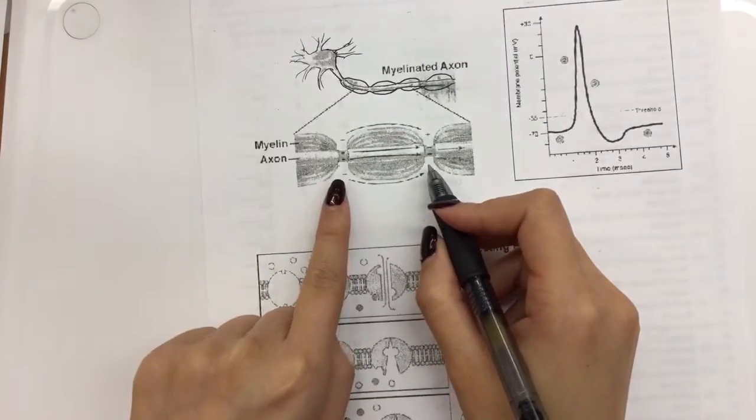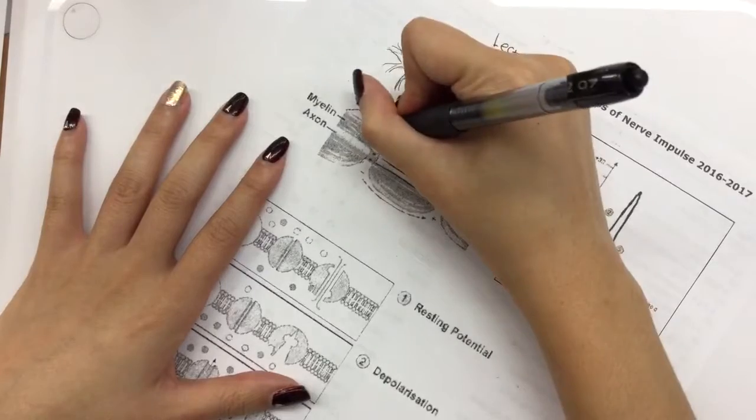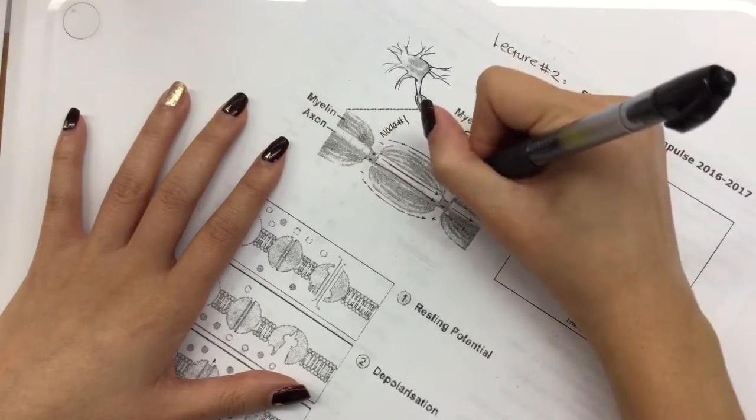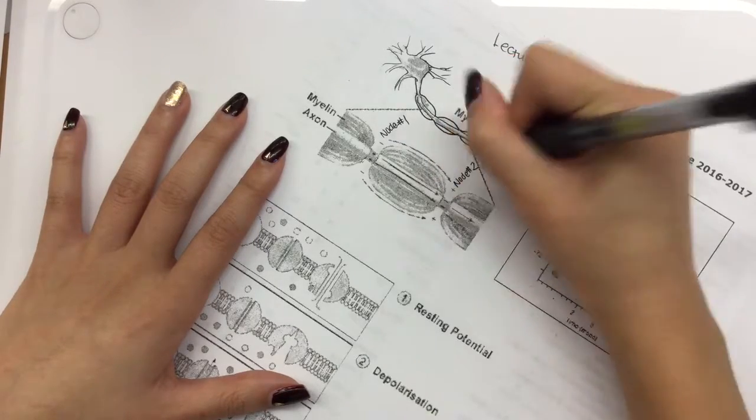How many nodes do we have in this picture? Two. So we're going to label one as node number one. The one that's closer to the cell body is node number one. The node that's a little bit farther away from the cell body is going to be node number two.